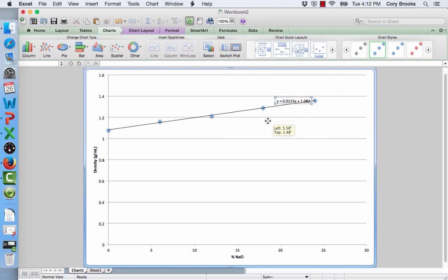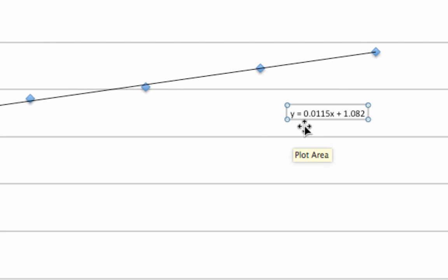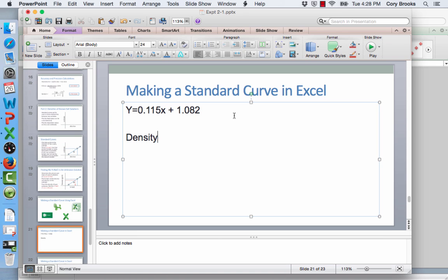And we can click and move our equation into an area where it's easier to see. There we go. So our equation is written in terms of x and y. You'll remember that the x-axis is the horizontal axis across the bottom and that the y-axis is the vertical axis. So what this equation is saying is that density on the y-axis is equal to 0.0115 times the concentration of sodium chloride in percent plus 1.082.